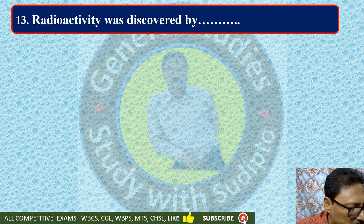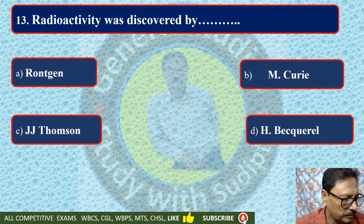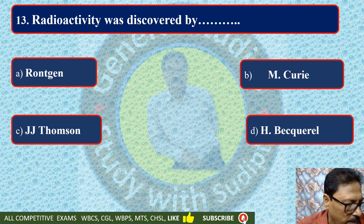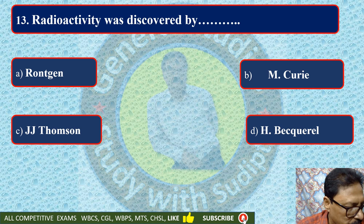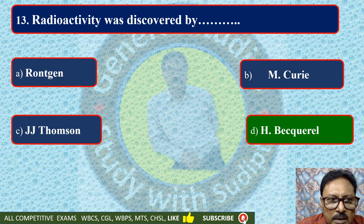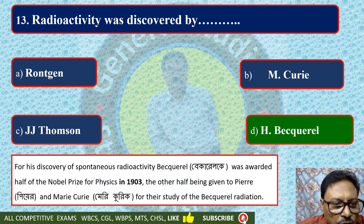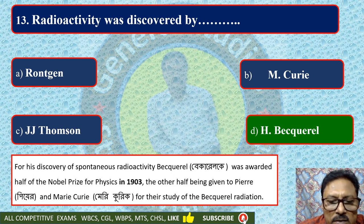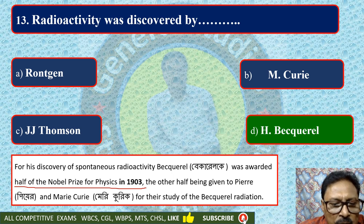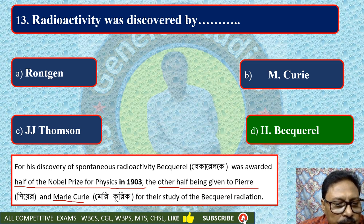Radioactivity was discovered by — Röntgen, Becquerel, Madame Curie, or J.J. Thomson. H. Becquerel is the correct option. For the discovery of spontaneous radioactivity, Becquerel was awarded half of the Nobel Prize in the year 1903, with the other half being given to Pierre and Madame Marie Curie for the study of Becquerel radiation.